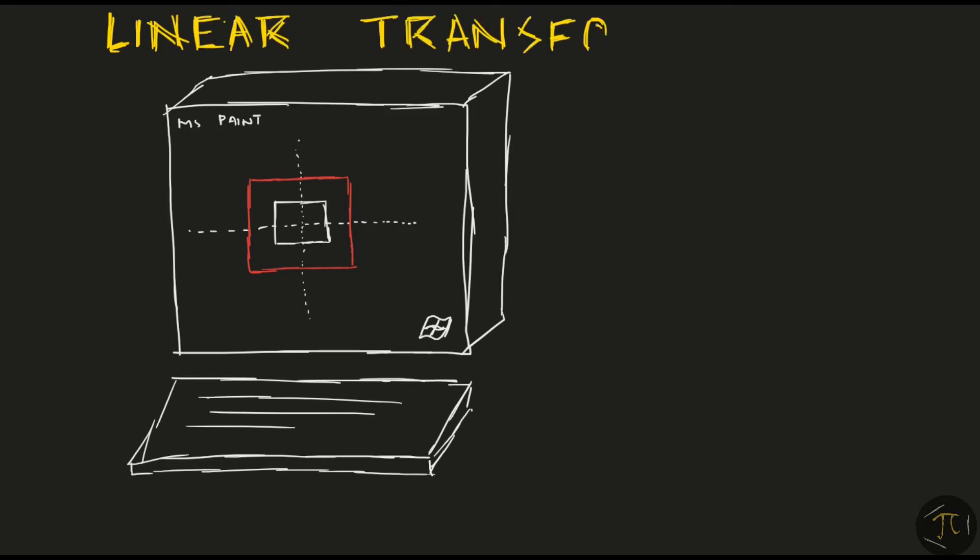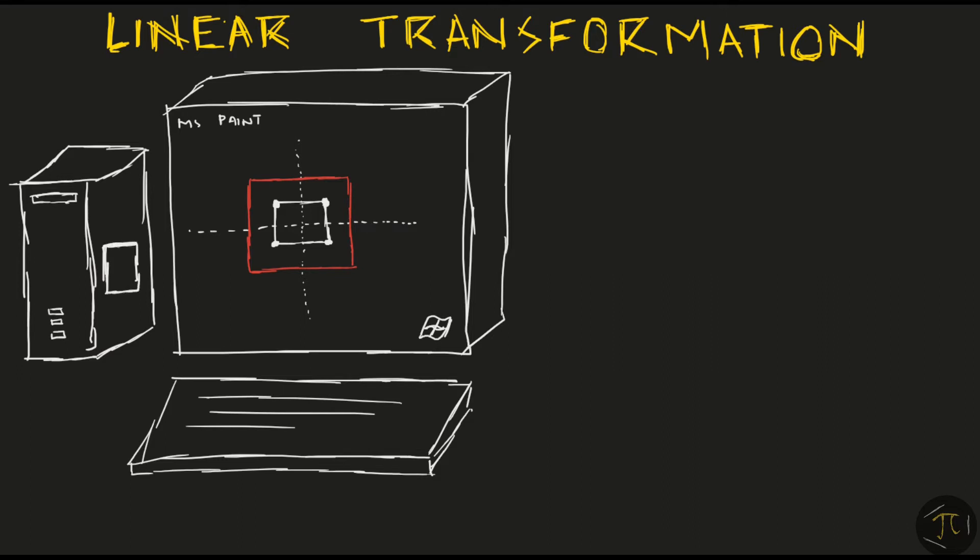What just happened is an example of linear transformation. For now say the corners of the square define the square completely. When you perform the zooming function, the computer took in the vectors of the corner points and transformed them into a scaled version of themselves.